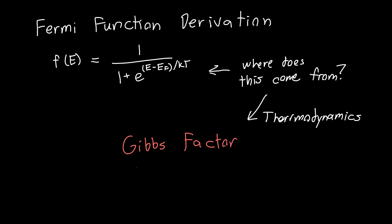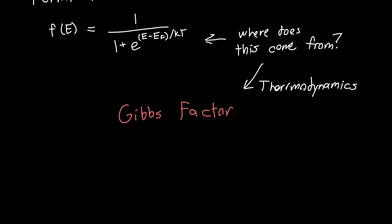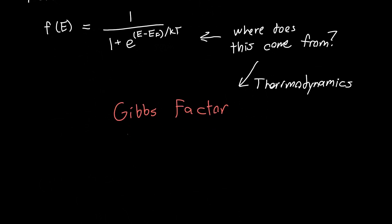It's got a fancy name named after this guy named Gibbs, which personally I think is a pretty cool name. What Gibbs said is that the probability of a given state being occupied with n electrons — they can be any particles, but we're just going to deal with electrons here — is just proportional to the negative exponential of the total energy of that state with n electrons divided by kT.